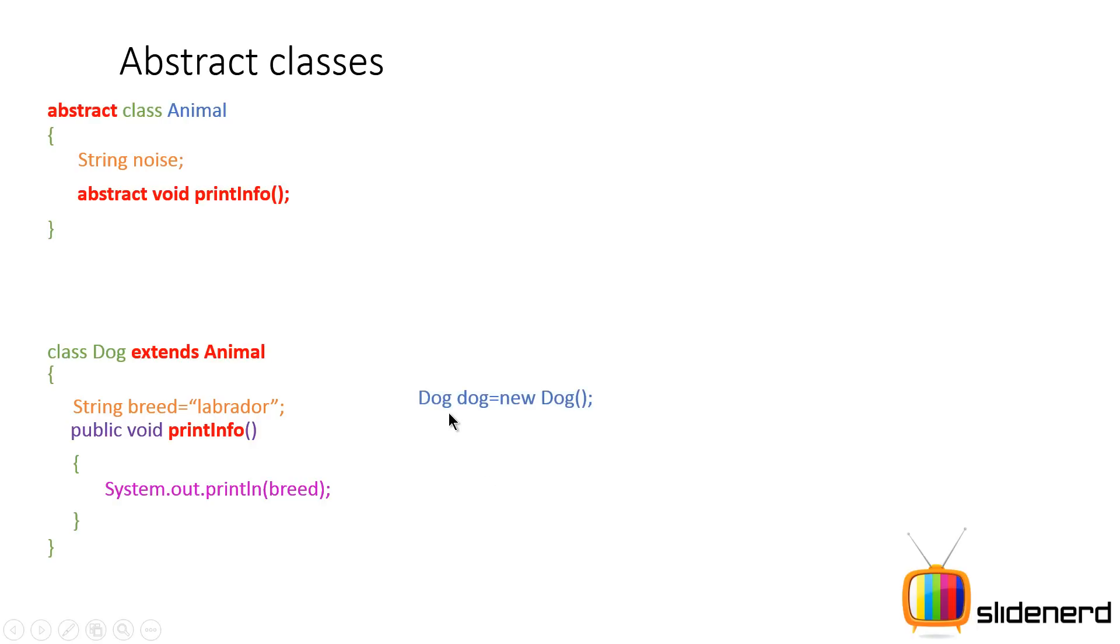So if you go and make an object of Dog, no problems with that, you can make an object. You have the dog, you have the breed as Labrador, you have the printInfo method with it that can be called, but you cannot make an object of this class Animal.